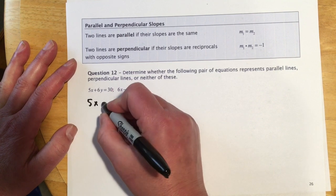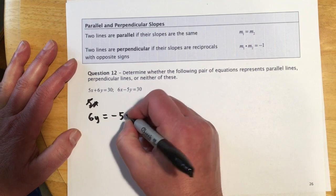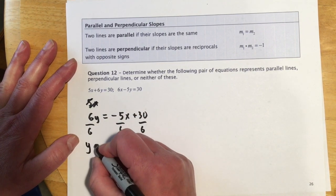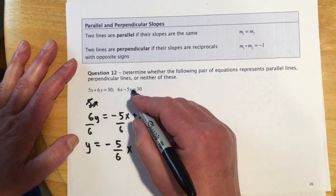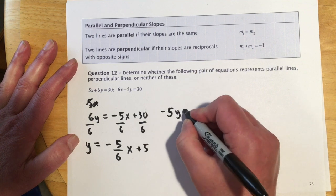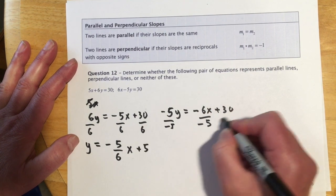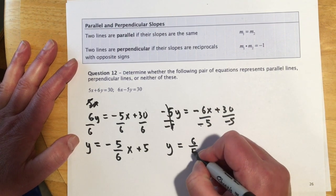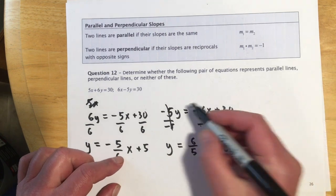So what we'll do is we'll solve each of these two equations, find their slopes, and then use these definitions to determine if it happens to be either of those. So for this first one, we'll do 6y. And then we subtract the 5x over plus 30. And I'll divide everything by 6. So this one in slope intercept is y equals negative 5/6 x plus 5. And then we'll do the same thing with this one. I'm going to subtract the 6x over and get negative 5y equals negative 6x plus 30. And then divide the negative 5 everywhere. So that cancels.